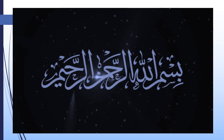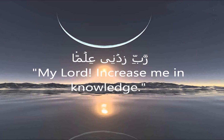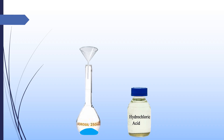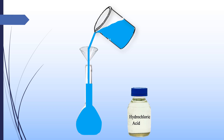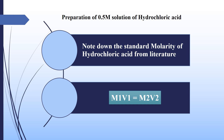Bismillahirrahmanirrahim. As I explain in my previous videos, to prepare a molar solution of liquid chemicals, it is necessary to find out the volume required for a given molarity. There are two methods which can be used to find out the required volume of a chemical. We use the dilution formula method.